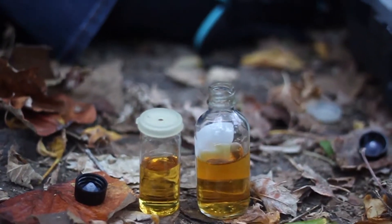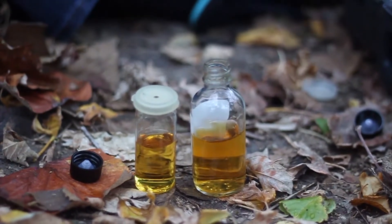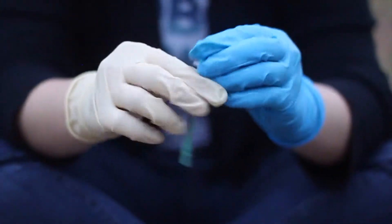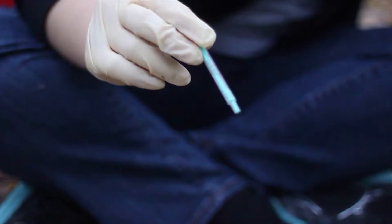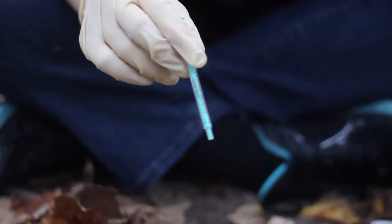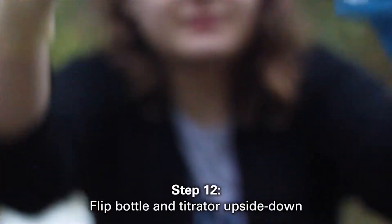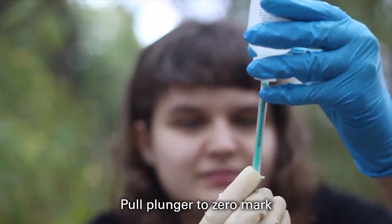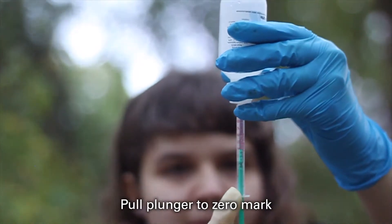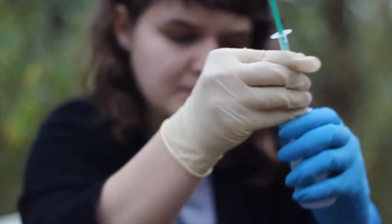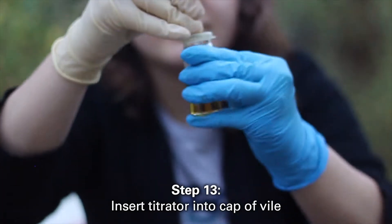Next we will take out our titrator syringe. Some kits have 2 titrators, but only one is needed. If you have a pink cap, you can use it to more accurately titrate. Take your titrator and insert it into the cap of the sodium thiosulfate in the large bottle. Flip the bottle and titrator upside down and pull the plunger until it is at the zero mark. Remove the titrator from sodium thiosulfate and insert it onto the cap of your vial.